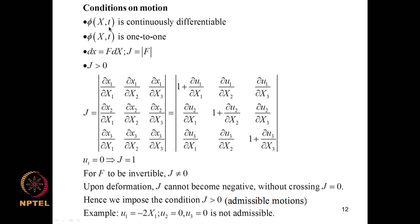The mapping φ which maps position vector X to lowercase x must satisfy certain conditions: it must be continuously differentiable and one-to-one, meaning F can be inverted. J is the Jacobian determinant of F. We impose the condition J > 0. If all displacements are zero, J = 1. For F to be invertible J must not equal 0. Since upon deformation J cannot become negative without crossing J = 0, we impose that J must be greater than or equal to 0 — these are admissible motions.